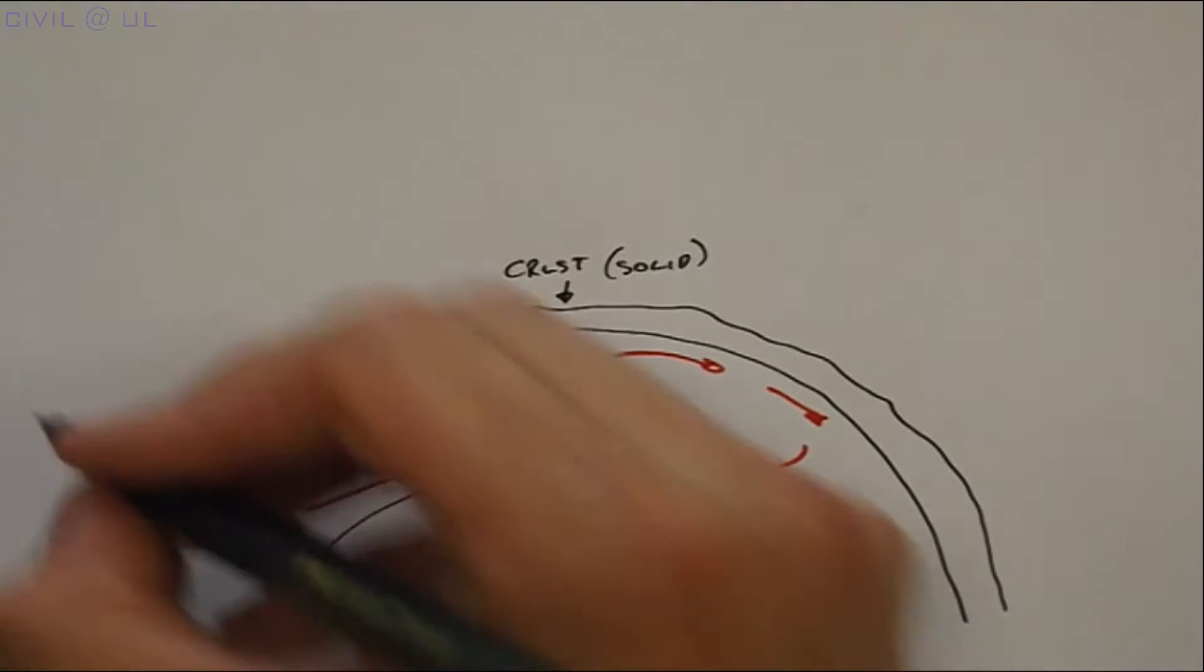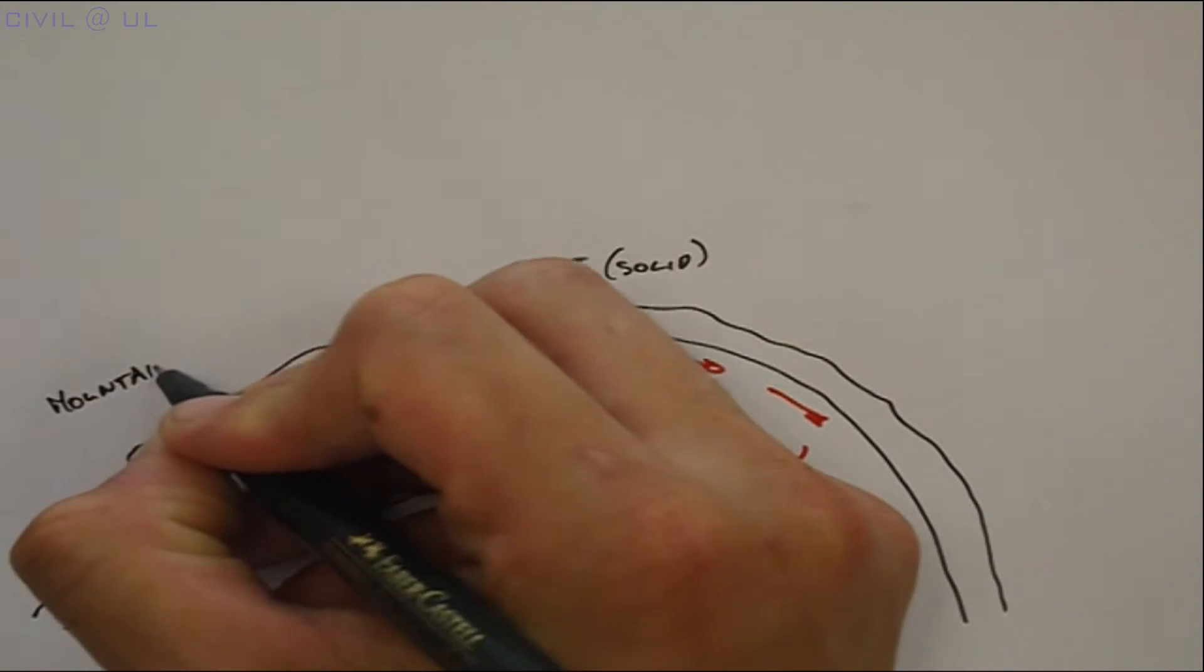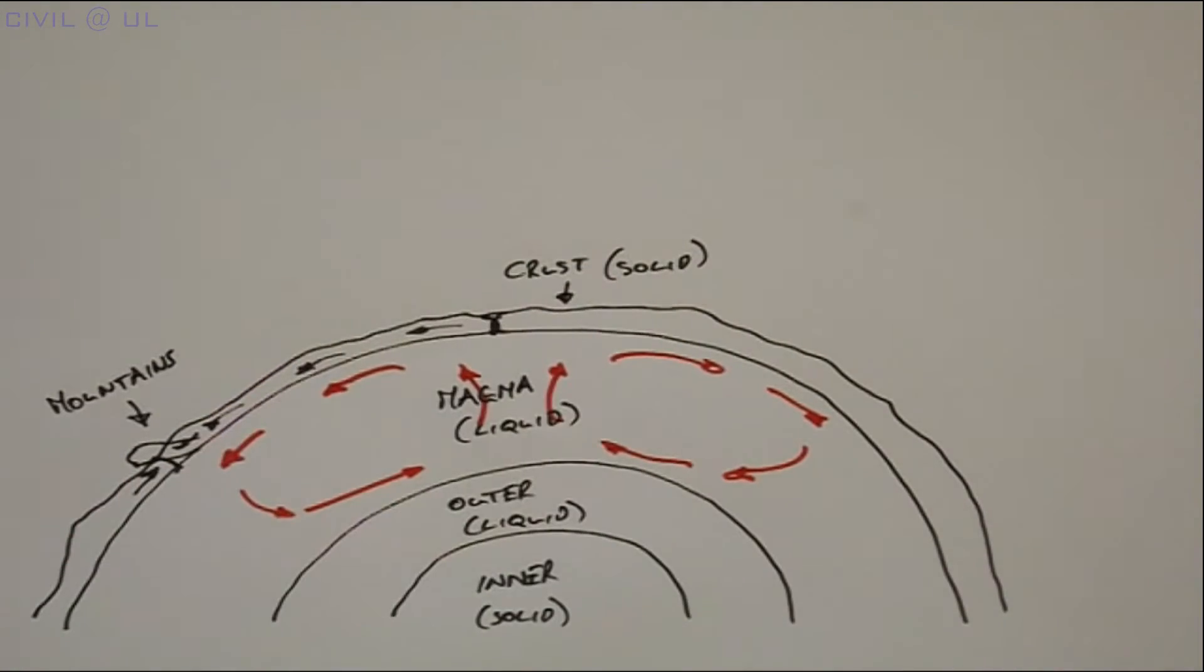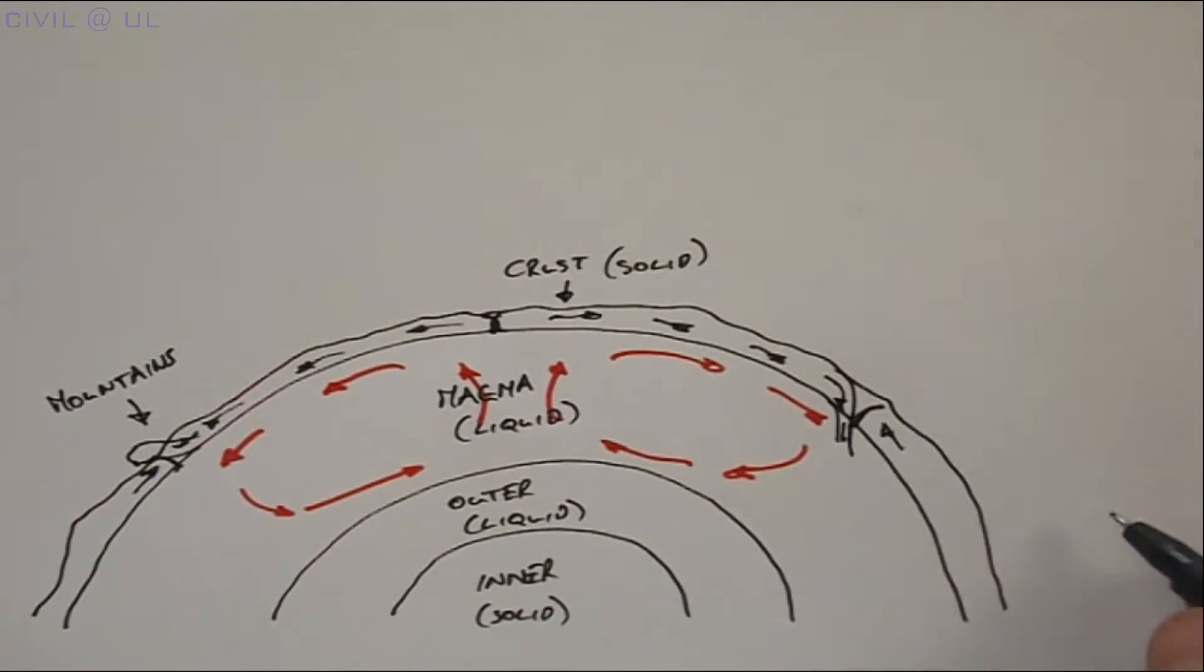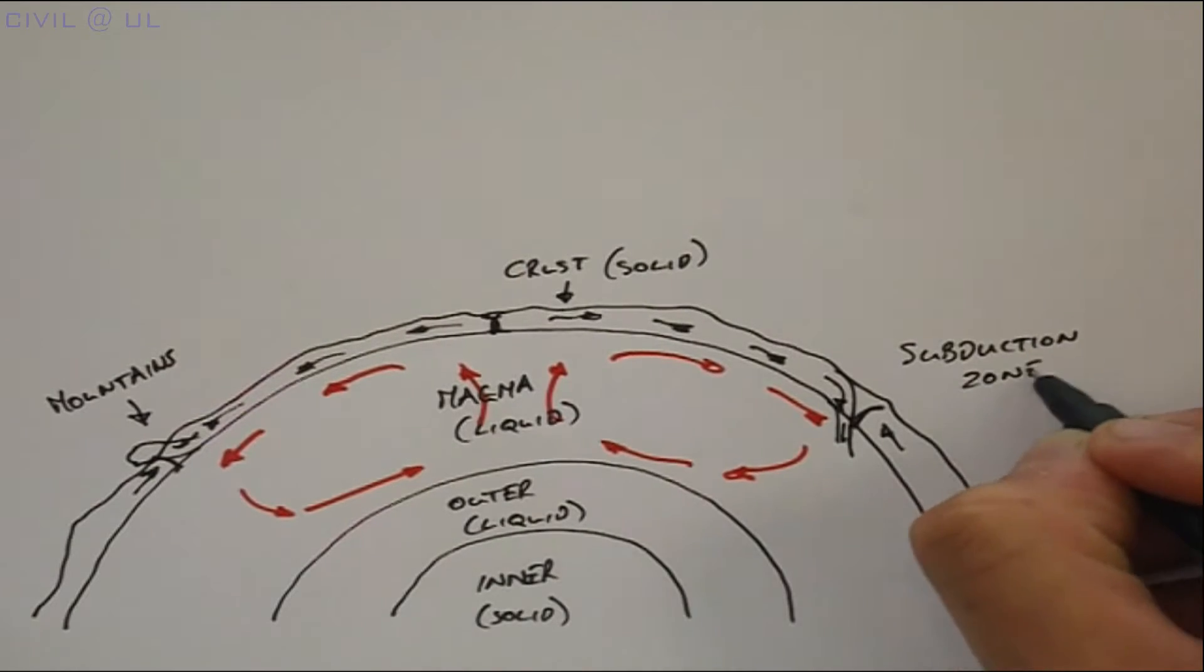Plates moving towards each other collide and result in either upward movement forming mountains, or one plate may dive beneath the other and form what's known as a subduction zone.